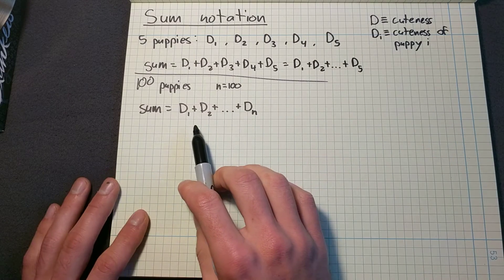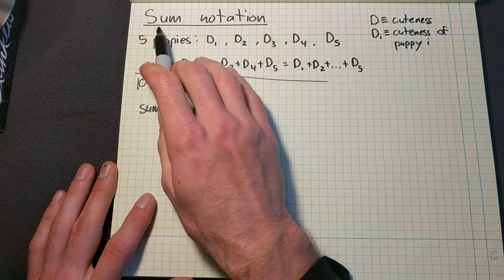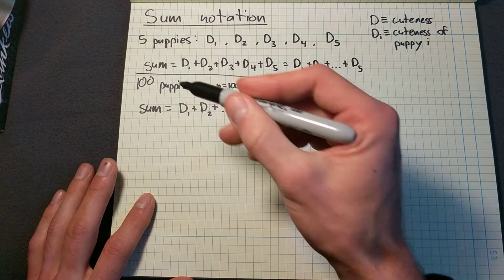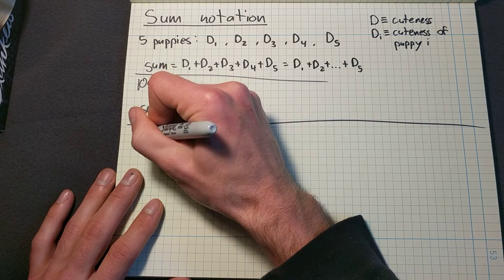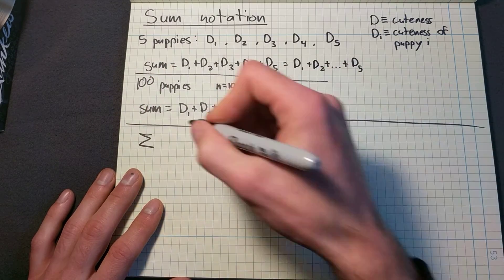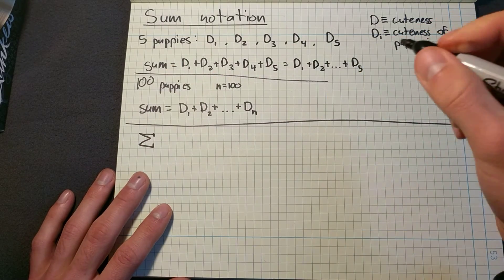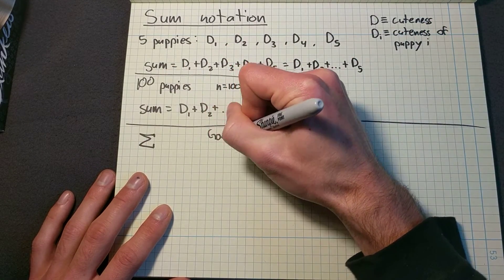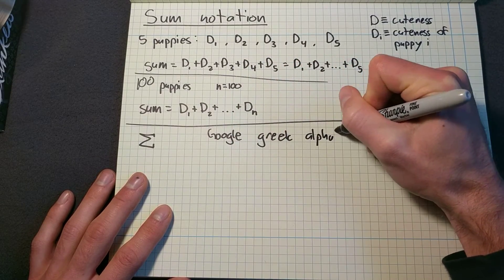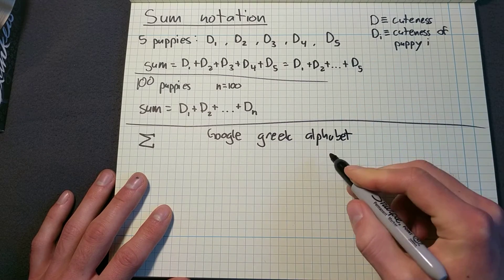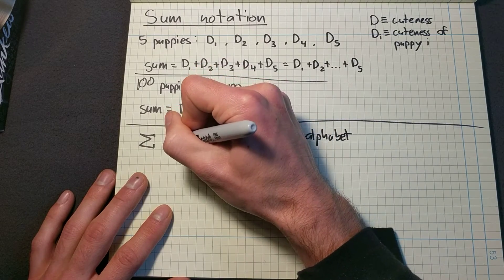And there's actually an even shorter way to write this sum. And this is where we get into sum notation. So to do this, we're going to use the squiggly line here, which is known as capital sigma in the Greek alphabet. So I encourage you to go and Google the Greek alphabet. And you'll see that this is a capital sigma, a lowercase sigma looks like this.